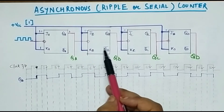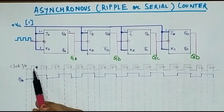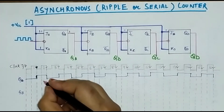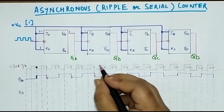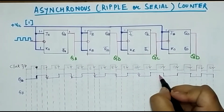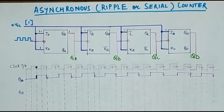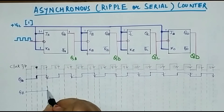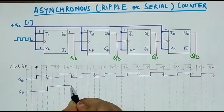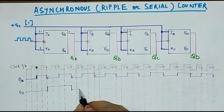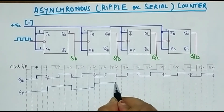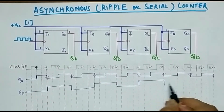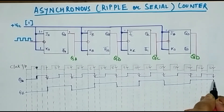In the second flip-flop, the output QB will change according to QA's transition, not according to the clock input directly. So when QA changes from high to low, the output of QB will change. In the initial condition QB was 0. At the point where QA falls, QB changes to 1, and it remains 1 until QA falls again. QB is changing according to QA and not according to the clock input.